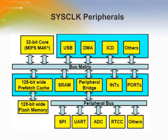Peripherals such as the prefetch cache, USB, DMA, SRAM, interrupts, and IO ports are called SYSCLK peripherals. These peripherals run at the same speed as the CPU and other bus masters. As a result, all accesses to the SYSCLK peripherals complete in one cycle. Typically, peripherals with high data throughput are placed on the SYSCLK bus. Note that the IO port modules are also on the SYSCLK bus, meaning the CPU can access IO ports at maximum operating frequency.